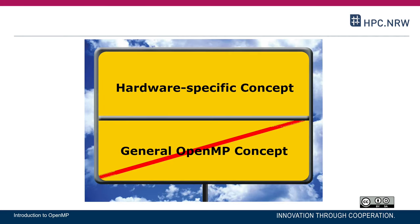Let me emphasize that false sharing is hardware-specific. This is not a general OpenMP concept. We can encounter false sharing, which is a performance problem or a limitation of performance and scalability, because multiple threads work on shared memory. Because of that it applies to OpenMP, but it can also apply to all other shared memory parallel programming models.